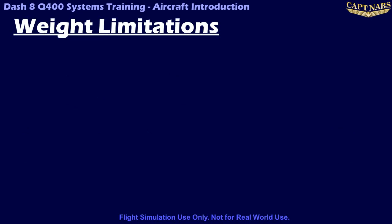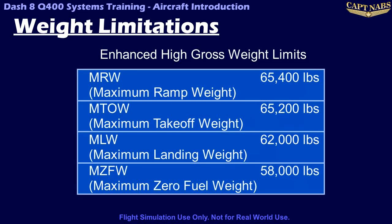The following table contains the maximum weights for the Q400. There are four different sets of weight limits that an airline can order. Based on Majestic's control panel, it appears they have modeled the highest gross weight model available. The ramp weight is the maximum weight for the aircraft to be loaded on the ramp prior to engine start. The maximum takeoff weight is 200 pounds less than the ramp weight, the assumption being that an aircraft will burn 200 pounds for engine start and taxi. The maximum landing weight is the maximum weight for landing that will not require a maintenance inspection. The maximum zero fuel weight is the maximum weight of the airframe and payload without fuel, ensuring the bending moment at the wing-to-fuselage joint is not excessive.